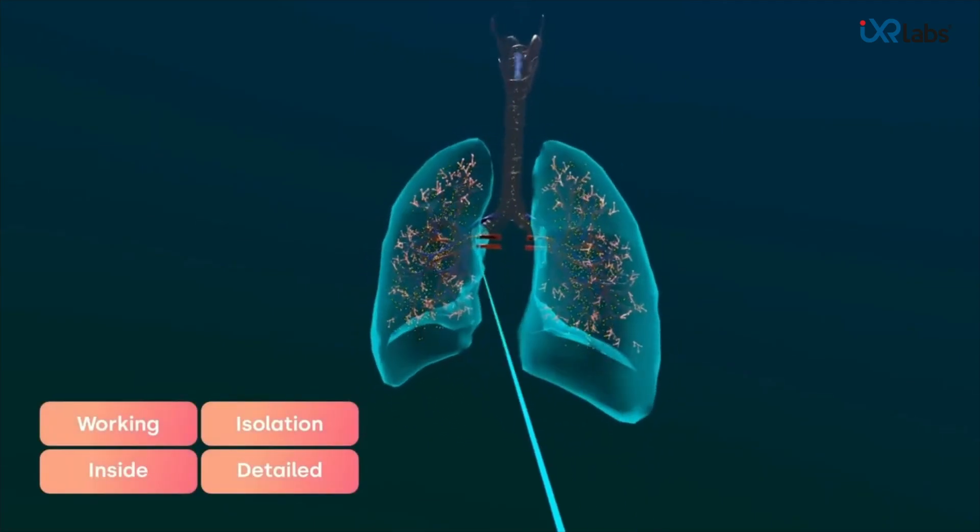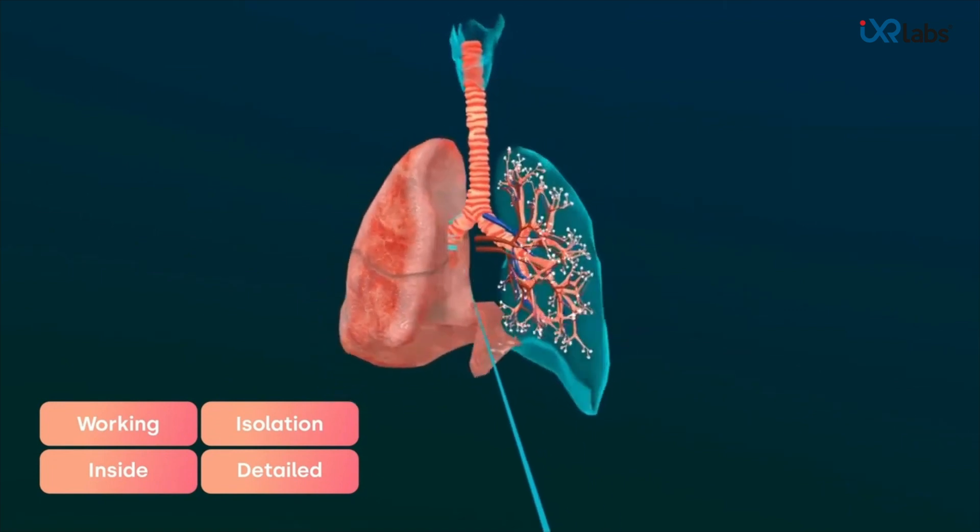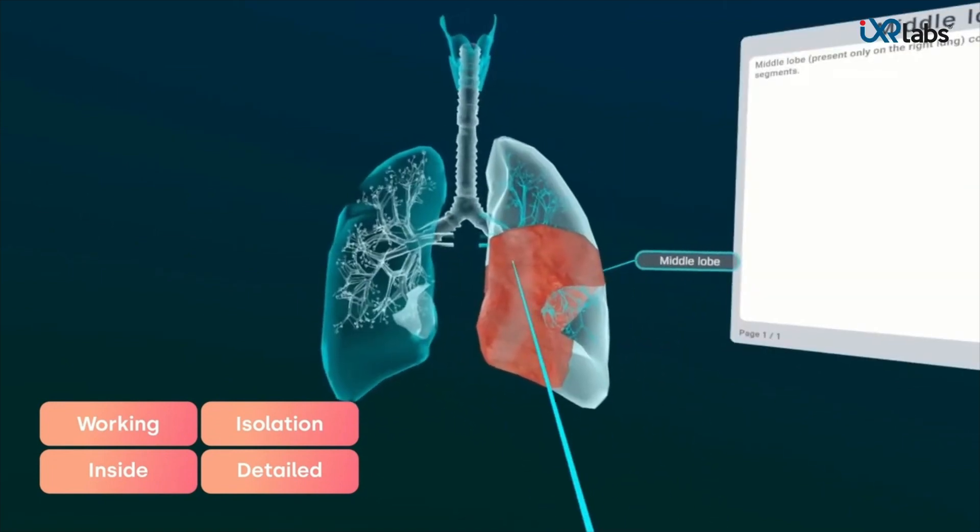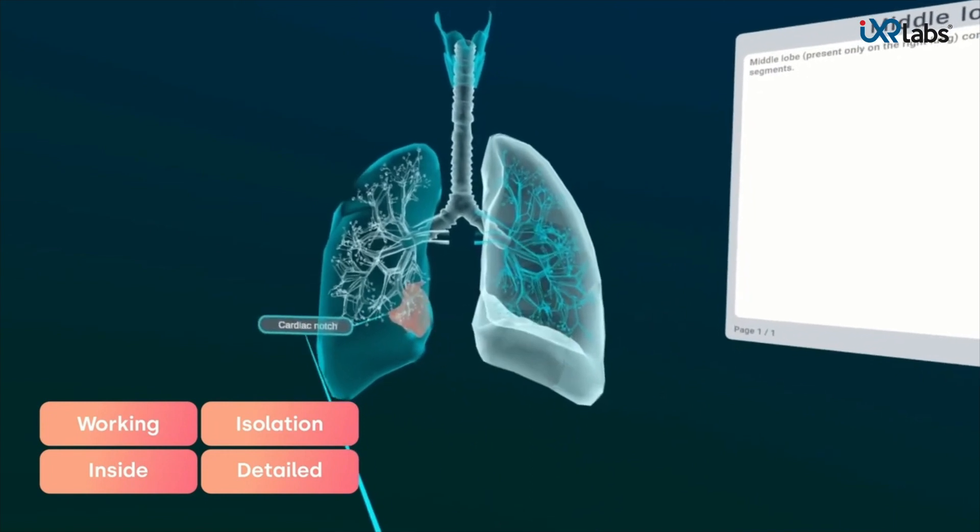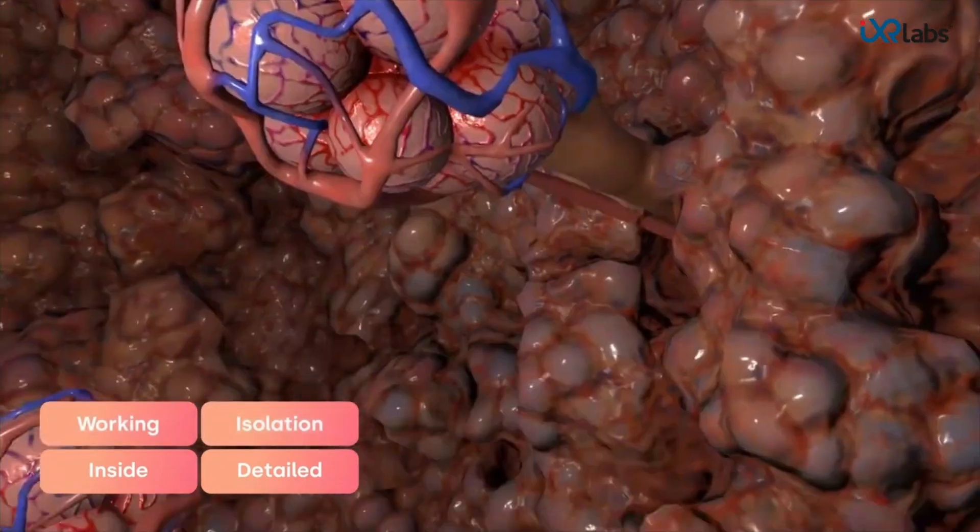So these are the lungs, and we can rotate and see a 360-degree view of it. We can see the internal working and the various parts. This is the inside view, and we can clearly see the alveoli.